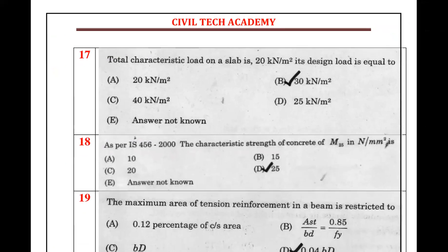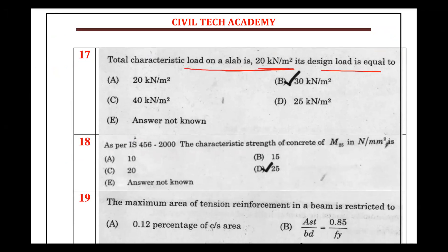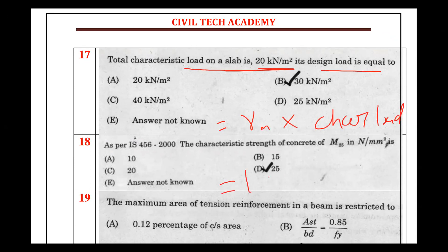The characteristic load of the slab is 20 kilonewtons. The design load is obtained by multiplying the characteristic load by the partial safety factor, which is 1.5. So the design load is 1.5 × 20 = 30 kilonewtons.